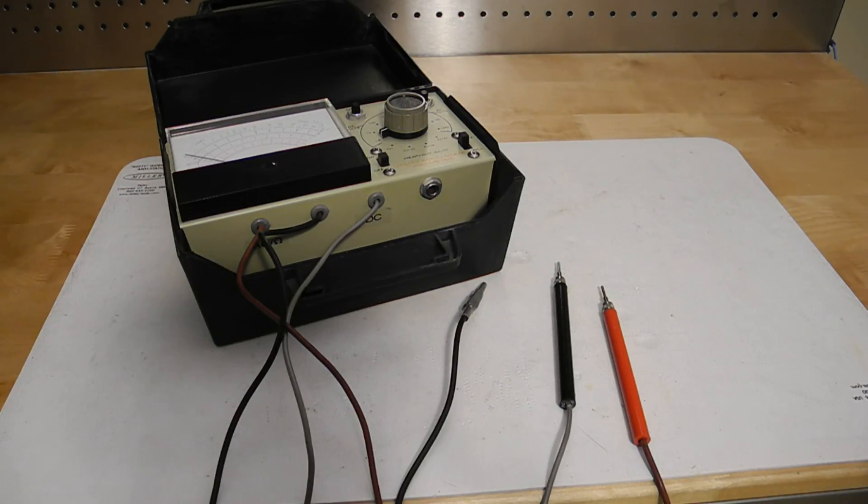The unit has three permanently attached test leads which fit into the case. The gray lead is for DC volts, the red lead for AC volts and ohms, and the black lead is the common.